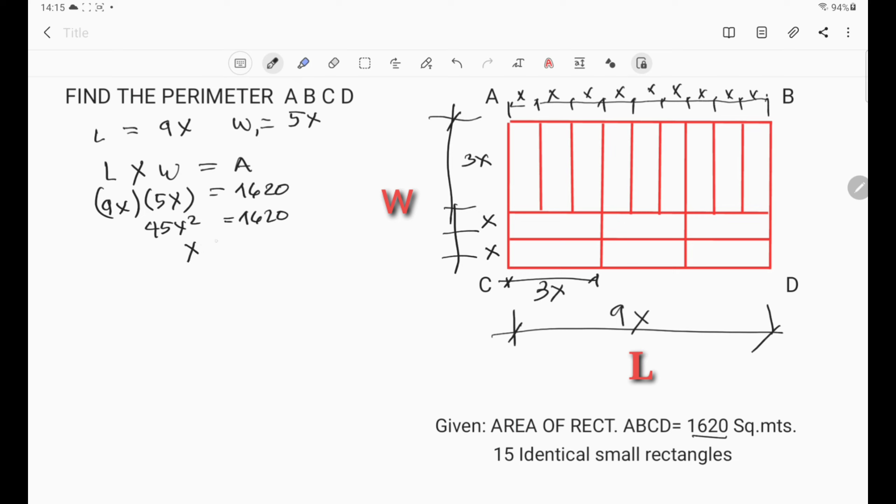So 45 x squared is equal to 1620. So x squared is equal to 1620 over 45.